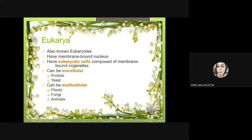Eukarya, also known as eukaryotes, have a membrane-bound nucleus and are composed of membrane-bound organelles. They can be unicellular or multicellular. Examples of unicellular organisms include protists and algae, while examples of multicellular organisms are plants, fungi, and animals.